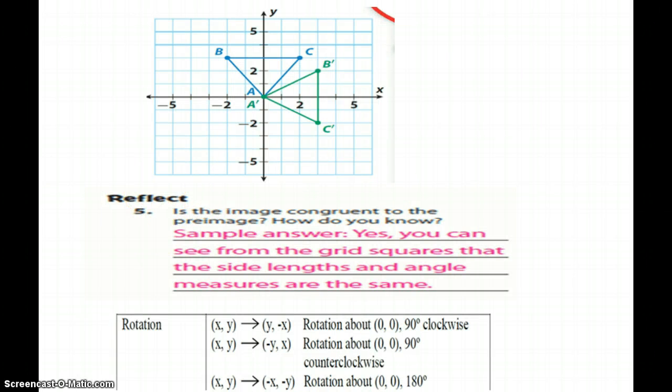Starting with the one that we talked about earlier, the reflect, is the image congruent to the preimage? Well yes, and you can see from the grid. If we were to count 1, 2, 3, 4, and you will see that this is, if you're going down 1, 2, 3, over 1, 2, so it would be the exact same thing going over 1, 2, 3, down 1, 2. Yes, you can see from the grid squares that the side lengths and the angle measurements are the same.